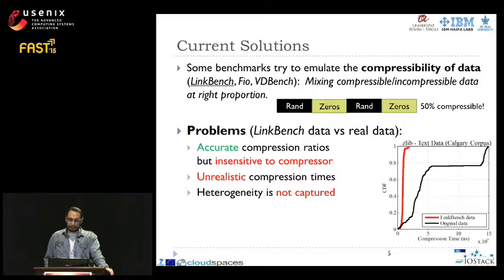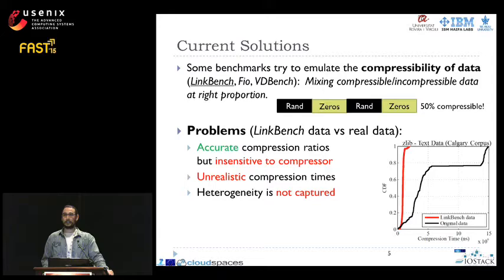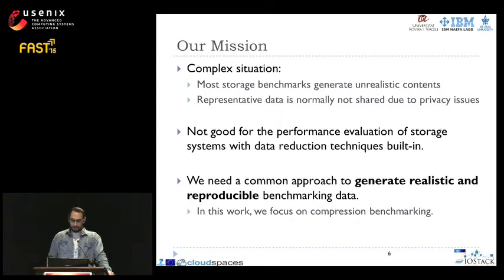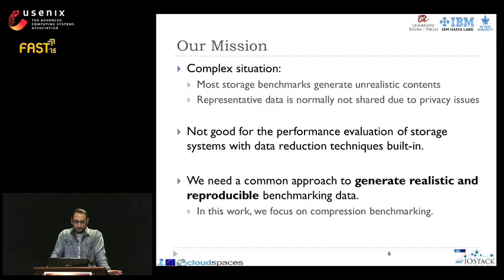The third problem is related to compression times. In the plot, we illustrate compression times for Zlib digesting text data chunks versus synthetic data chunks of the same compression ratio generated with LinkBench. Compression times in synthetic chunks generated this way are very far from real data chunk behavior, and this affects the performance of storage systems. We face a complex situation where most benchmarks generate unrealistic contents, and representative data is normally not shared due to privacy and practicality issues.